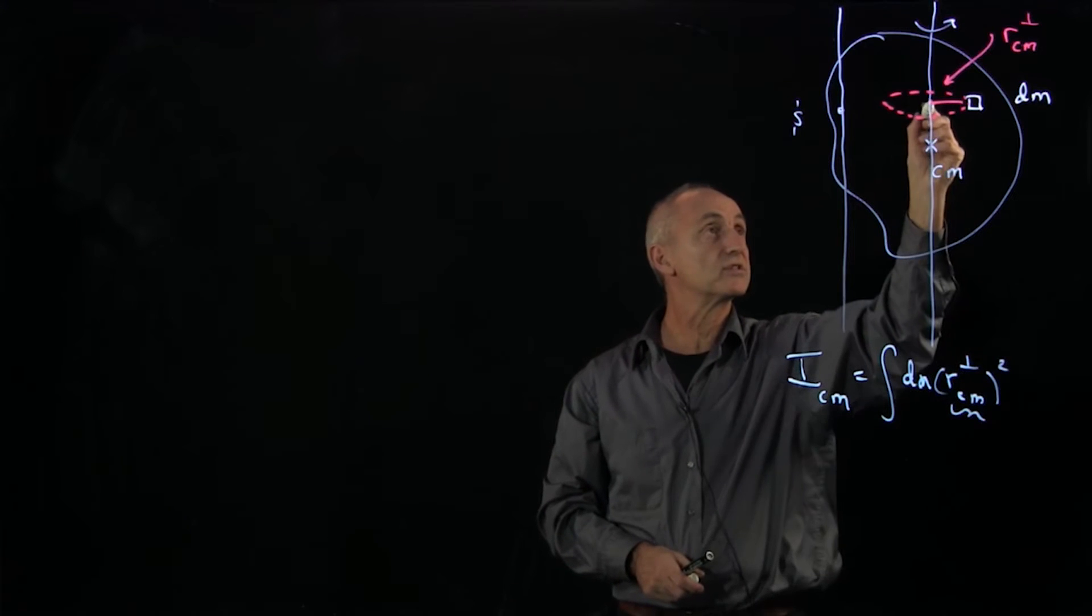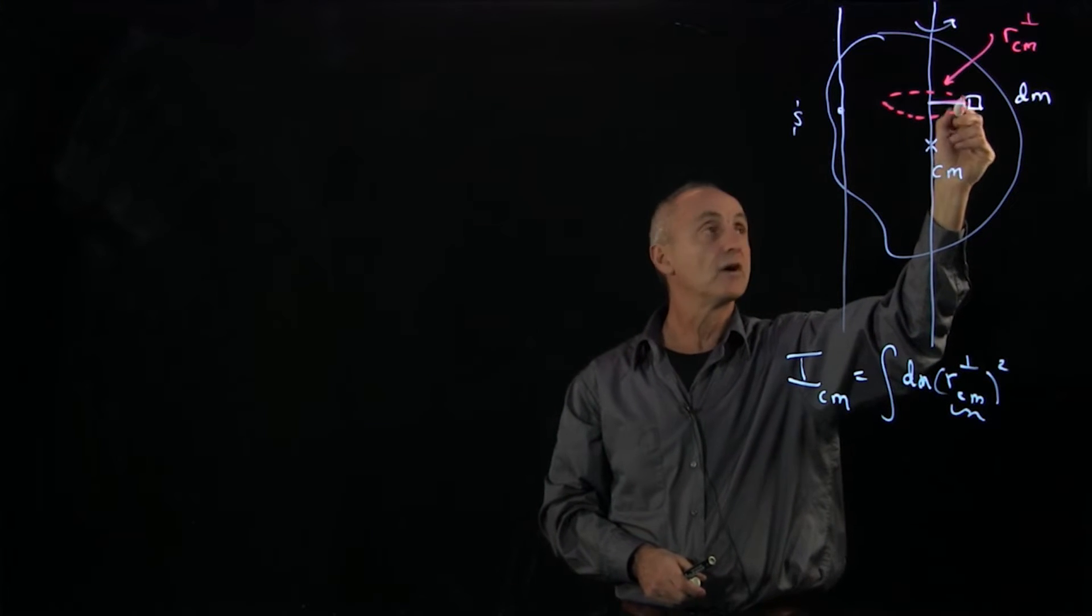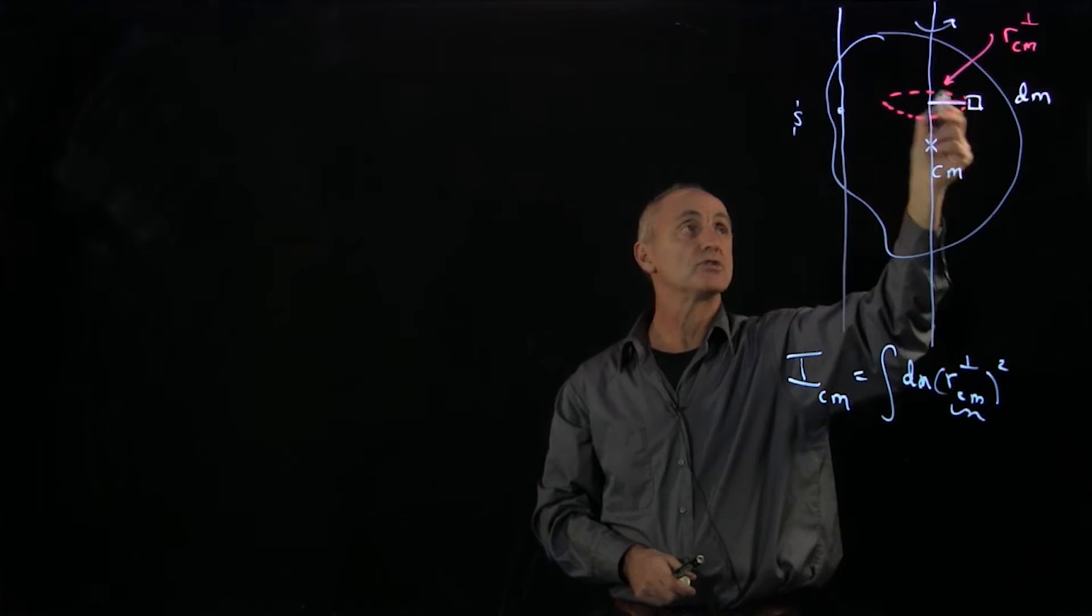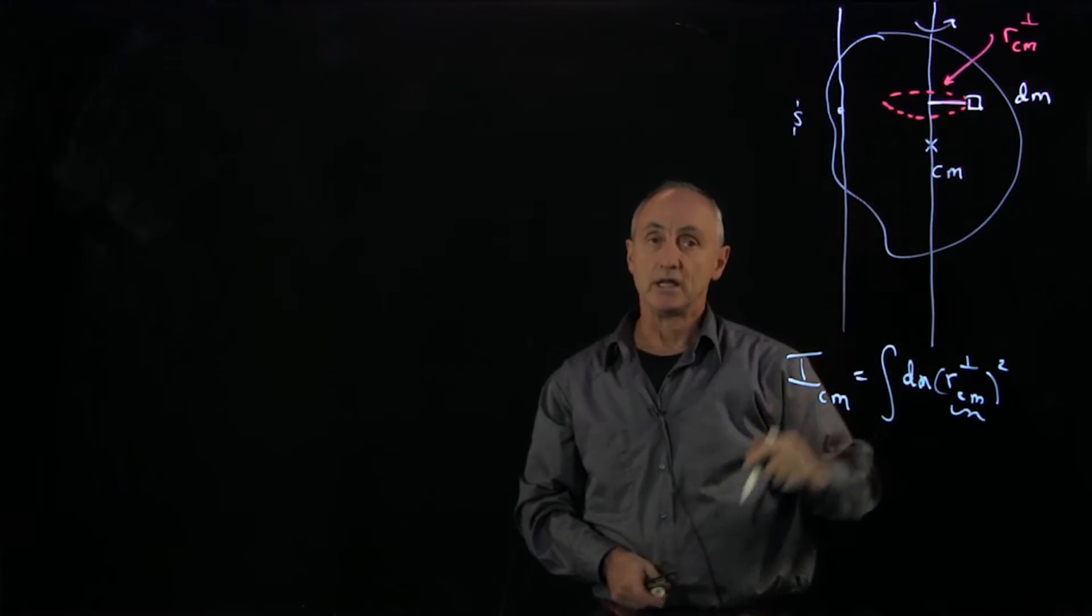What is this distance? This is the perpendicular distance from our dm to the axis of rotation. Imagine it's doing a circle, and that's the radius of that circle.